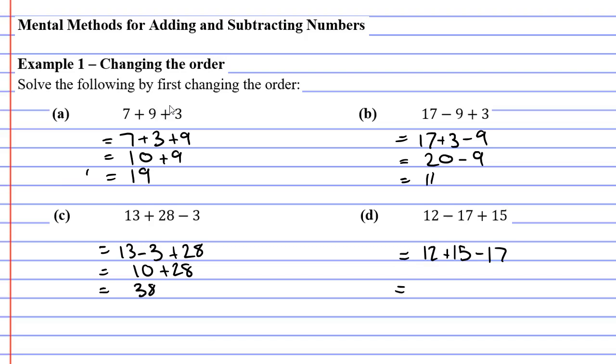27 doesn't end in 0, but it works out quite well because 27 minus 17 is 10. Since they both end in 7, it becomes quite simple to solve.